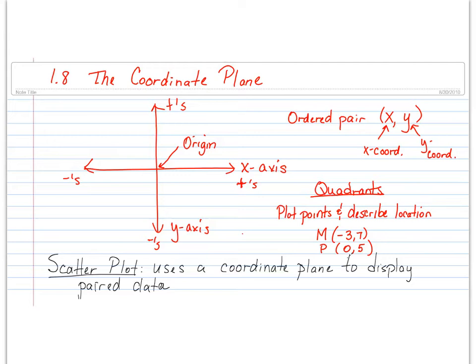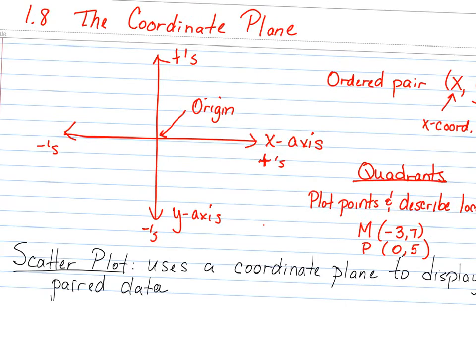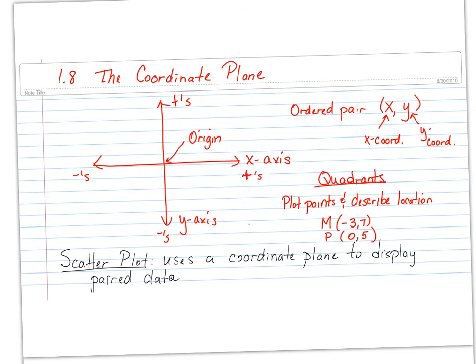We are going to be talking about the coordinate plane today, and in our book it's lesson 1.8. Something you need to remember from when you were in elementary school: when we have two lines like this that intersect, that makes the coordinate plane.